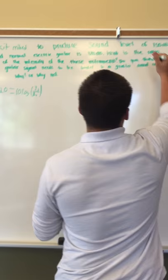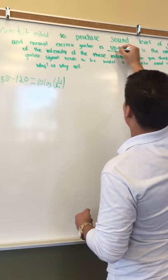So what we've done here is we've realized that the drum kit is to 150 decibels and a normal electric guitar is at 120 decibels.